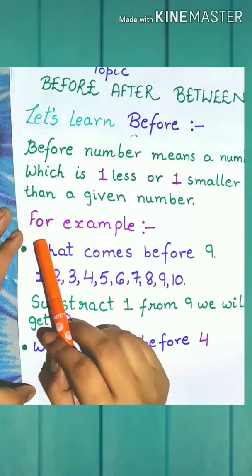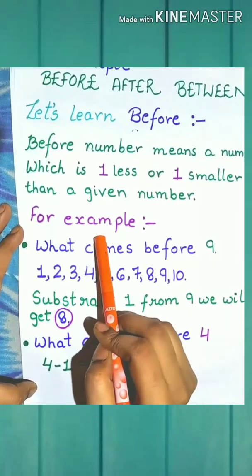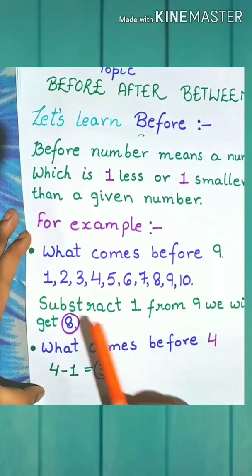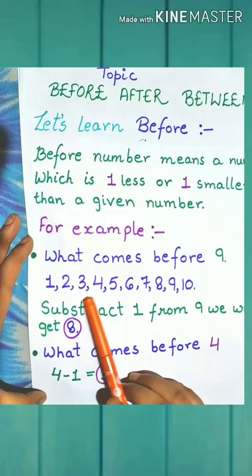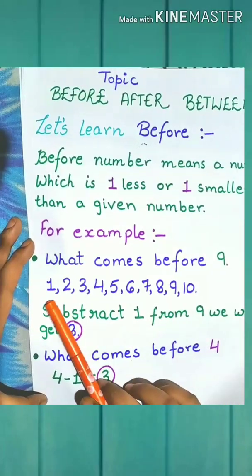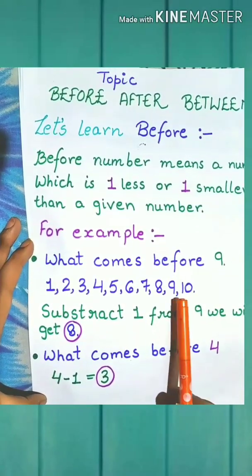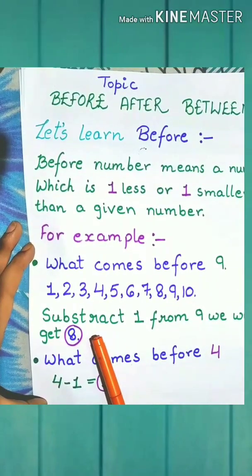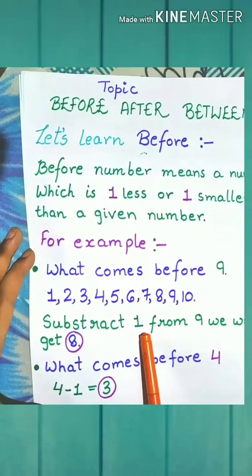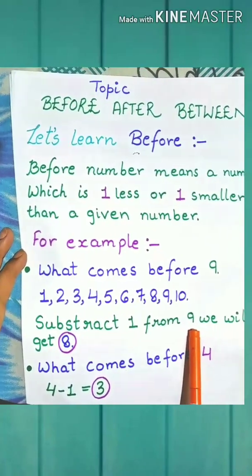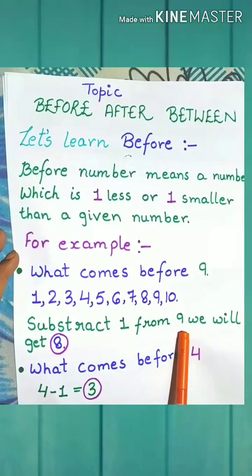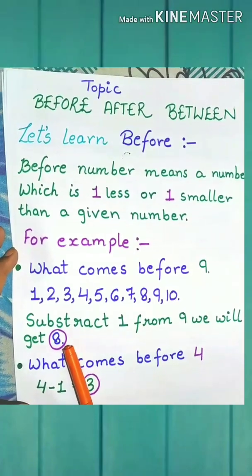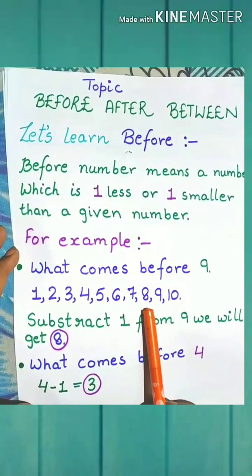Now let us understand with the help of an example. What comes before 9? First observe the number line. We will subtract 1 from 9. When we subtract 1 from 9, we will get 8. So 8 comes before 9.